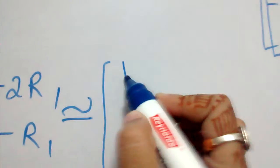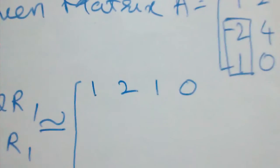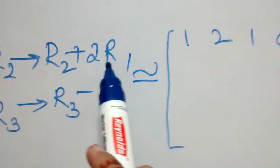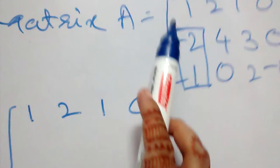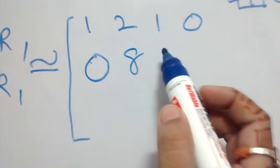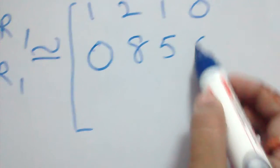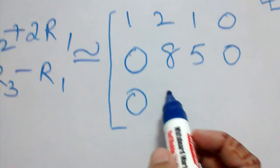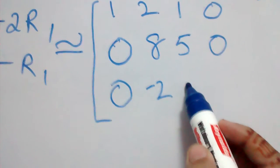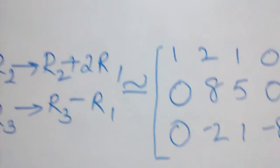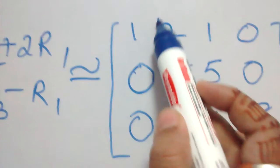Applying R2 → R2 + 2R1: the first row stays [1, 2, 1, 0]. For R2: -2 + 2(1) = 0; 4 + 2(2) = 8; 3 + 2(1) = 5; 0 + 0 = 0. For R3 (R3 - R1): 1-1 = 0; 0-2 = -2; 2-1 = 1; -8-0 = -8. The resulting matrix is [1, 2, 1, 0; 0, 8, 5, 0; 0, -2, 1, -8].